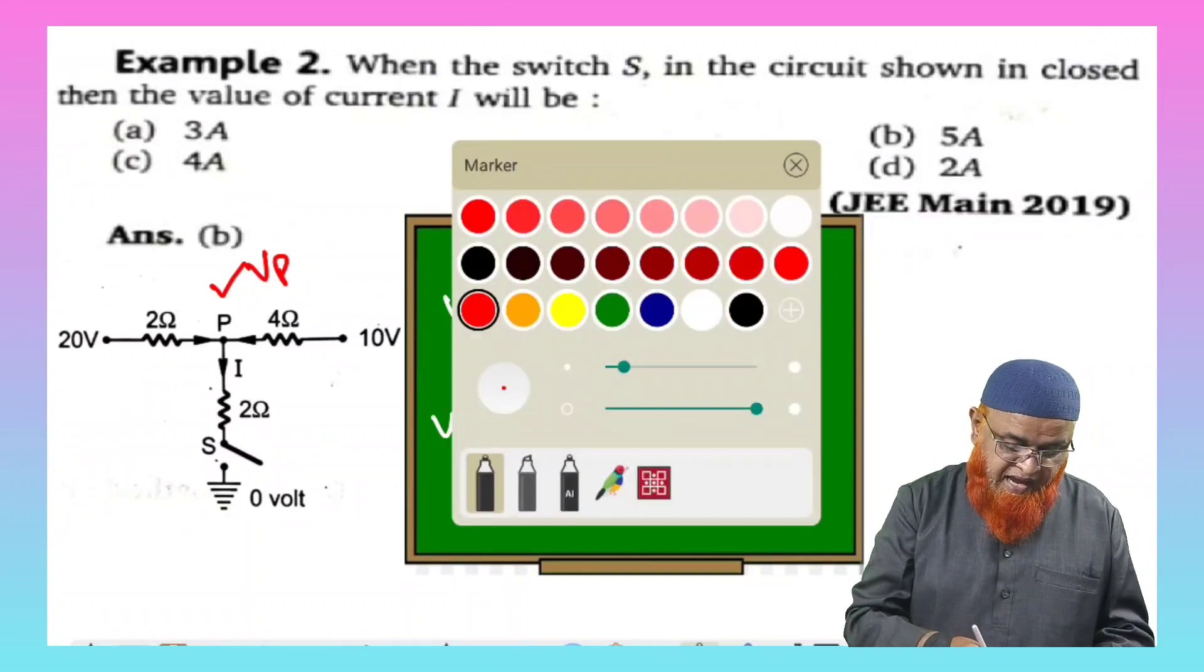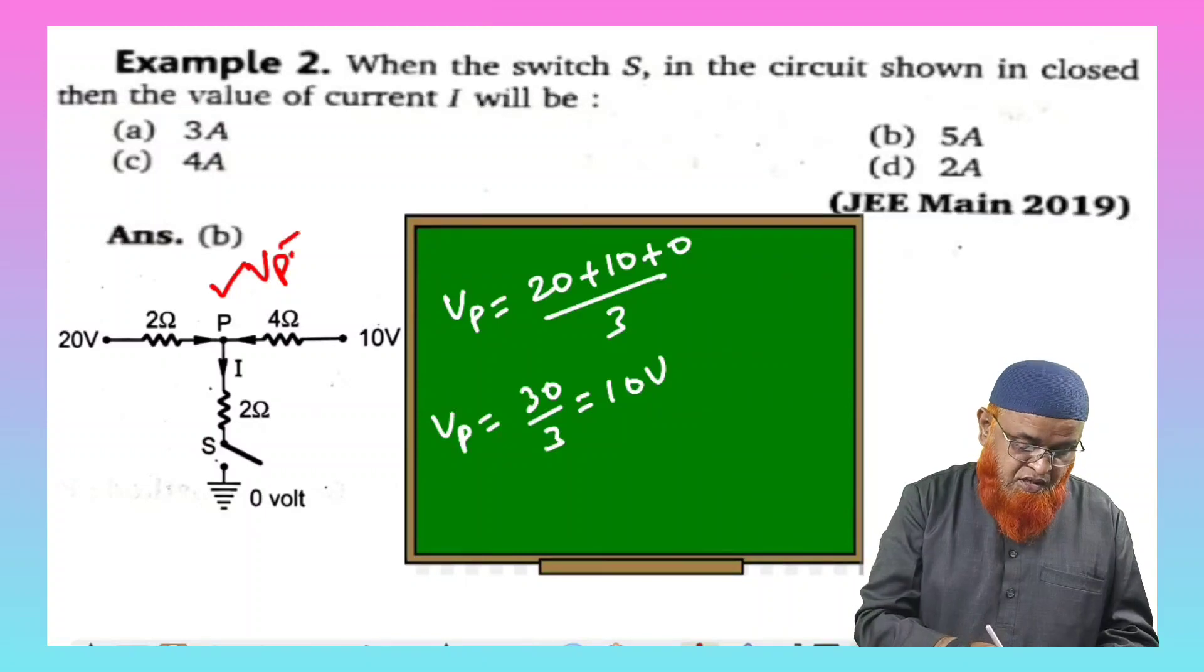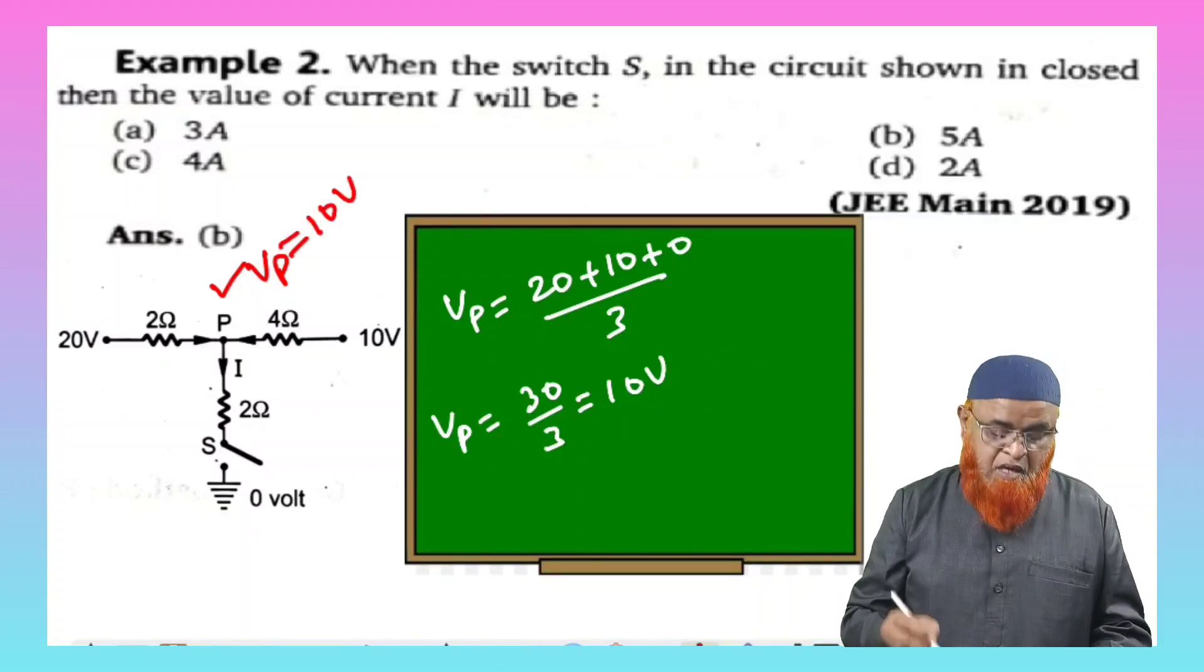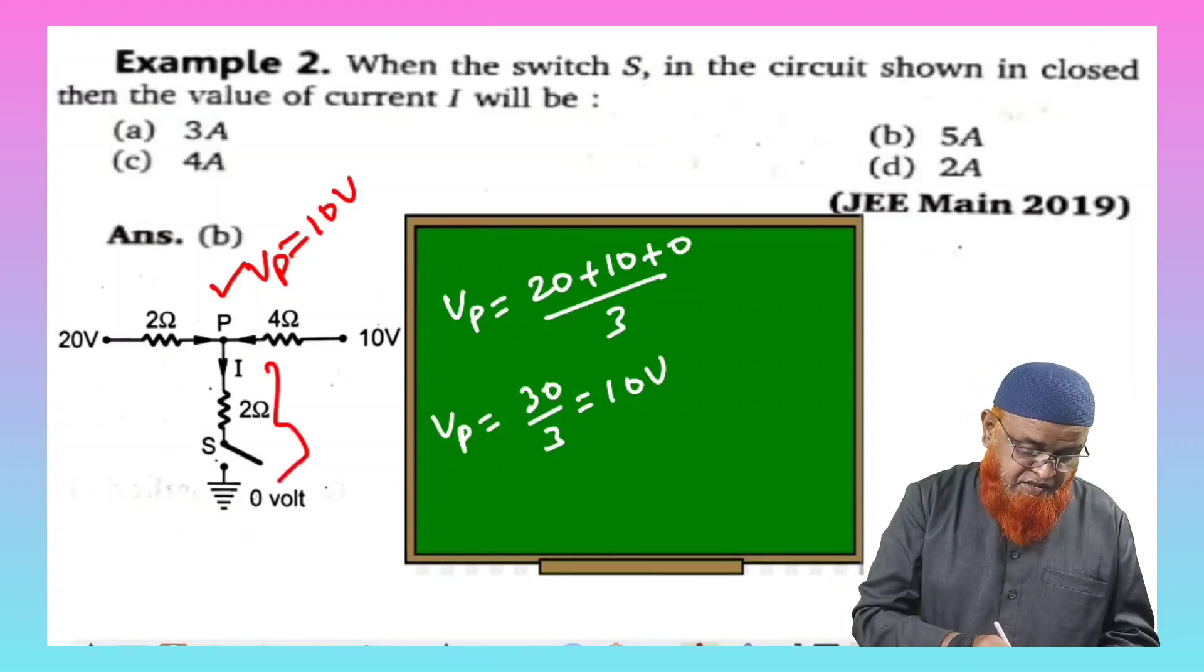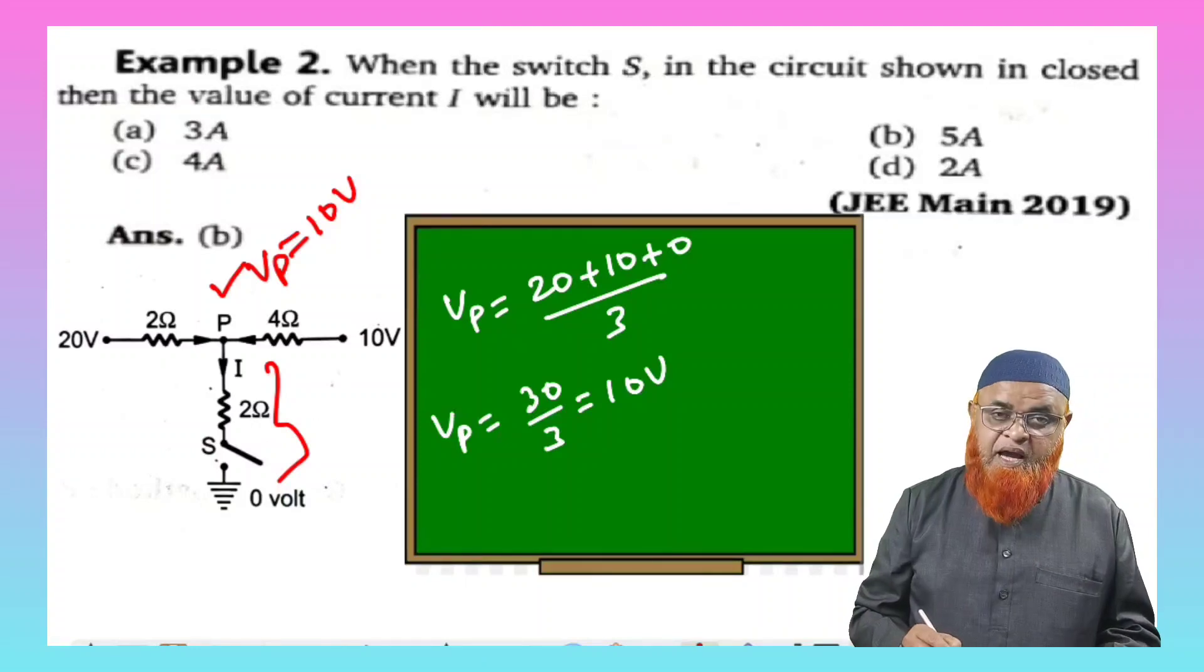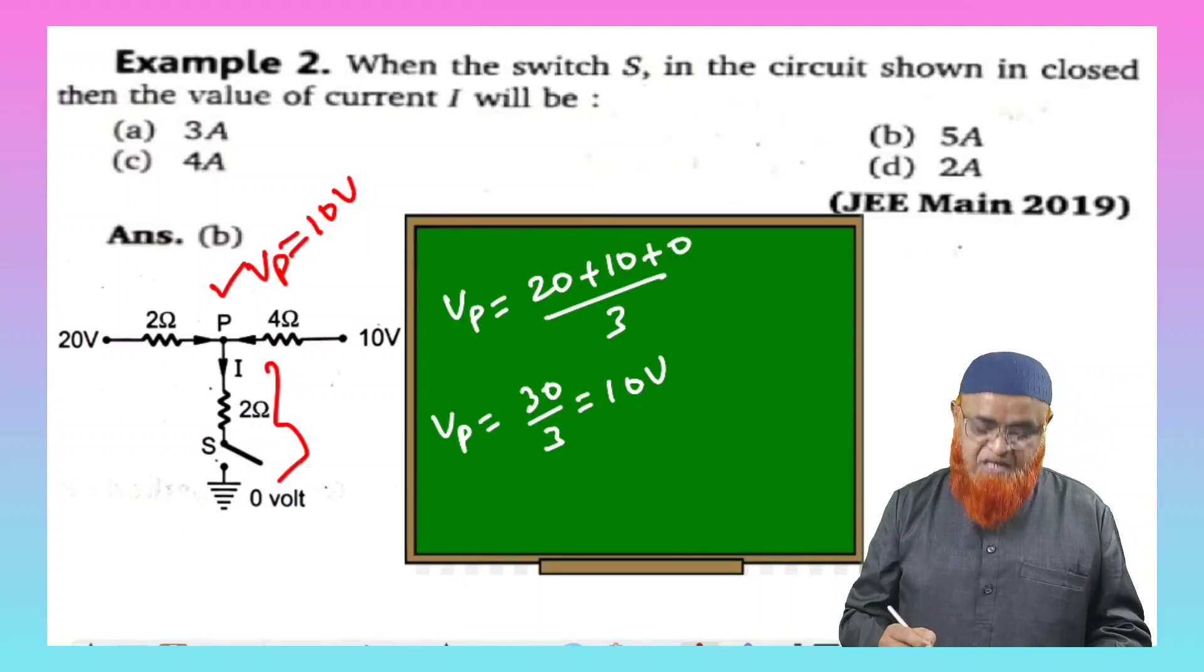So we got VP as 10 volts. VP is nothing but 10 volts here at this place. Now you can find out what is the current passing through this wire, in which there is two ohms resistance.